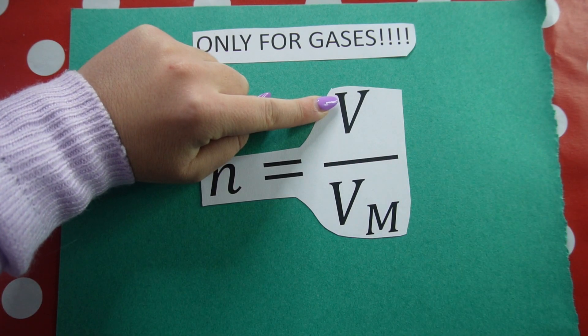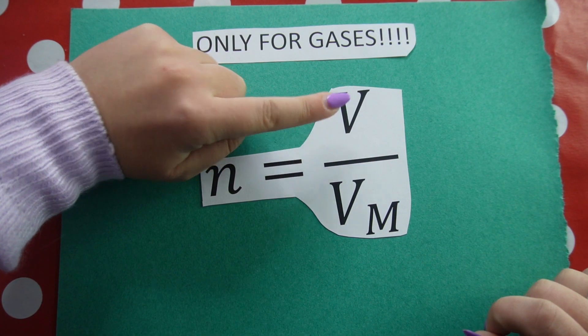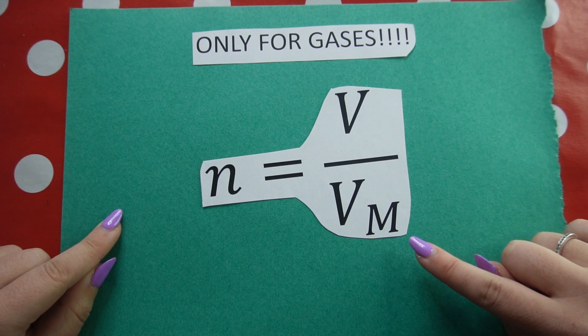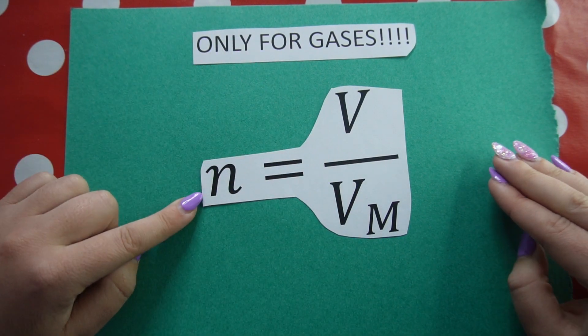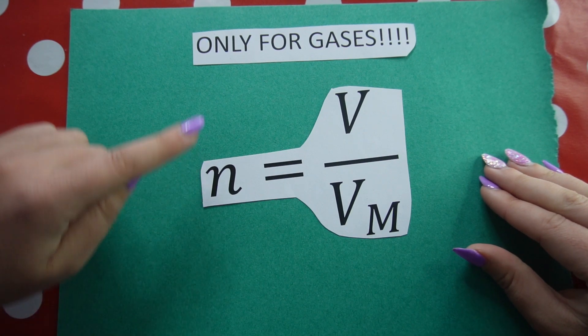N is the number of moles, V measures volume in cubic decimeters, and Vm is molar volume. This formula will ultimately give me the number of moles, but remember we are only working with gases.